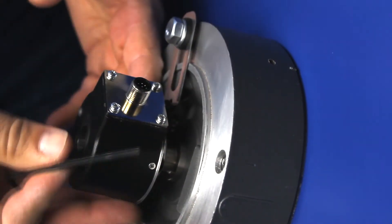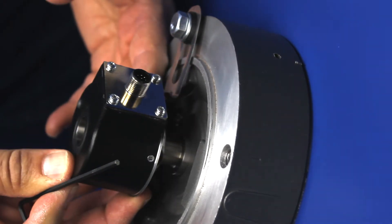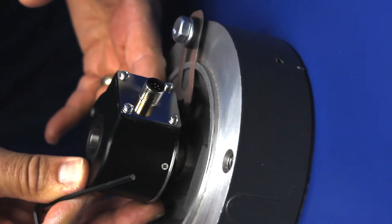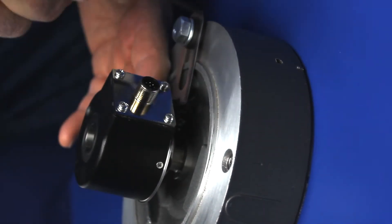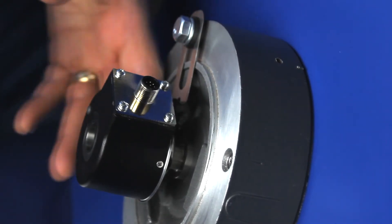Adjust the encoder axially to its final location on the shaft. Ensure that the flex arm is straight, not bowed, otherwise you can apply unnecessary loads to the encoder bearings.